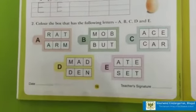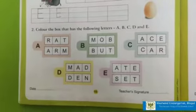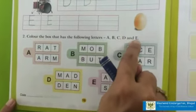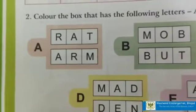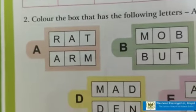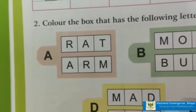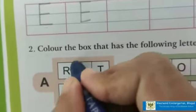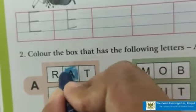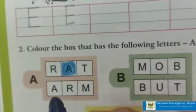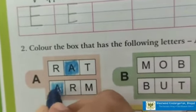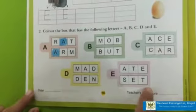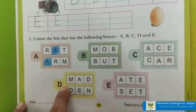Now we will come to the next exercise: Color the box that has the following letter — A, B, C, D, and E. First we have to search the letter. Which letter is this? A. Now you have to search letter A, where it is, and then color it. In this way, you have to search all the letters one by one and then color them. Very good.